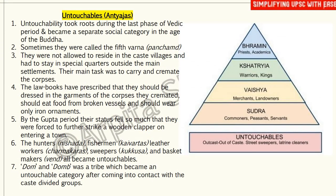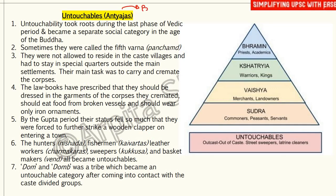As you can see in this triangle, the Varna system is represented: at the top is Brahmin — the priests and academics; the second level is Kshatriya — the warriors and kings; the third level is Vaishya — merchants and landowners; the fourth level is Shudra — commoners, peasants, and servants. At the last level were also those known as untouchables or street sweepers. Untouchables were also known as 'Antya-jayas' — this is important for prelims.